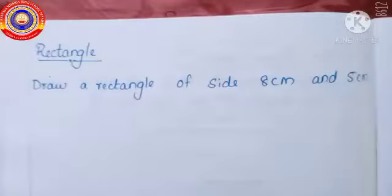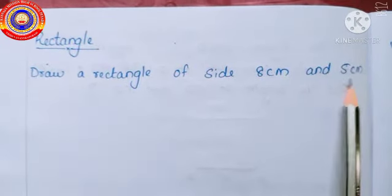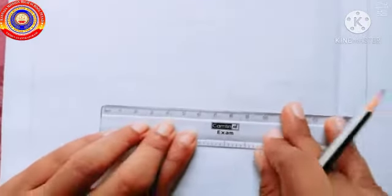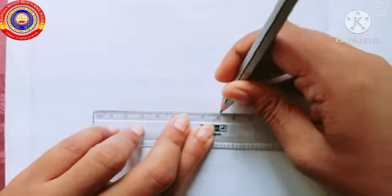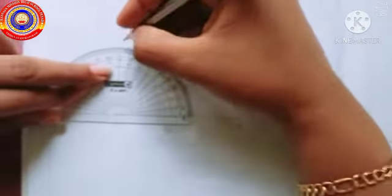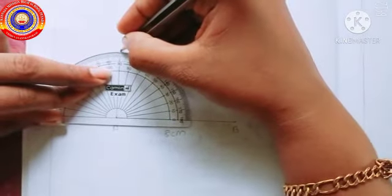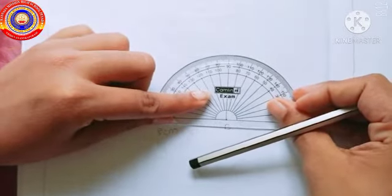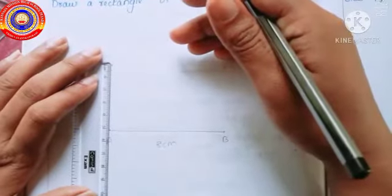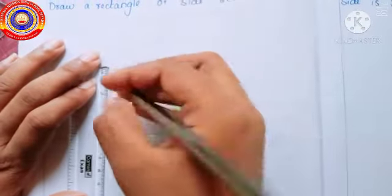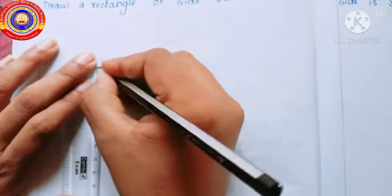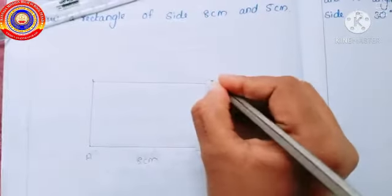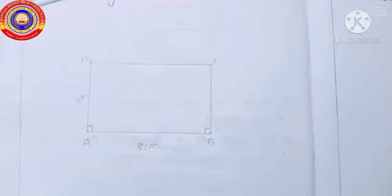You are all familiar with how to draw a rectangle with specified sides from your smaller classes. Let's do a question: draw a rectangle with sides 8 centimeters and 5 centimeters. First draw a line of length 8 centimeters. Then place the protractor at point A and mark 90 degrees, and also at point B mark 90 degrees. Draw lines 5 centimeters from the endpoints such that the angles are 90 degrees.